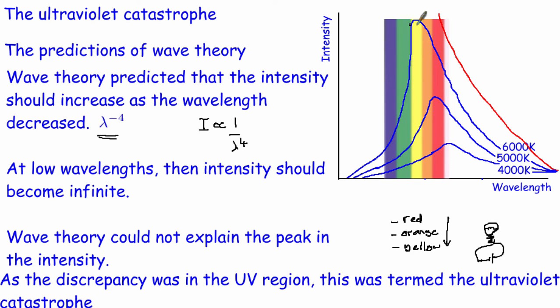In particular, it can't explain these peaks. The main discrepancy was in the ultraviolet region because you could have some really high temperatures and wave theory could maybe predict something like this. It couldn't predict what was happening inside the ultraviolet region, which is this part here. That's the reason it was called the ultraviolet catastrophe. The discrepancy between theory and experiment was in the ultraviolet region.